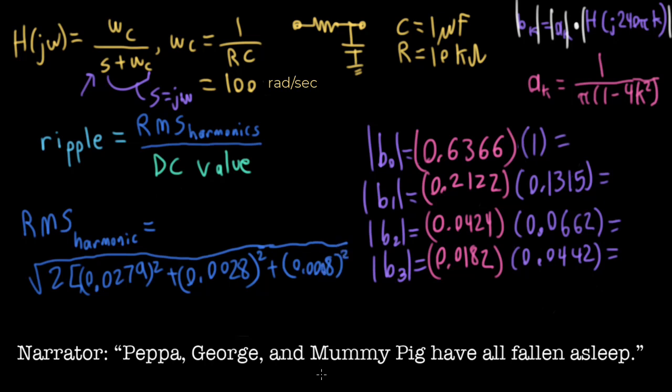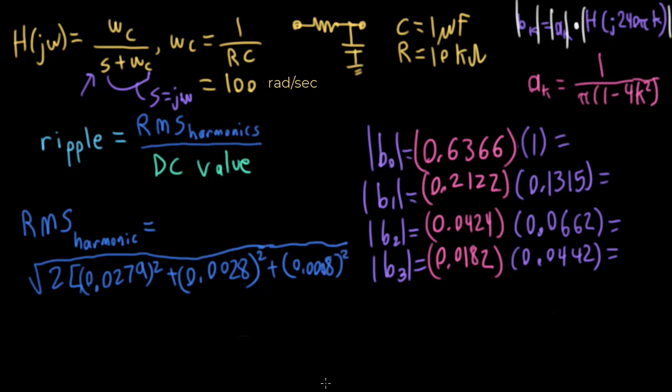And then my third term here, I'll take 0.008, oops actually there's another 0 in here, don't forget that, and I wind up squaring that. And again, I need to multiply by 2 to deal with the b₋₁, b₋₂, and b₋₃ terms, which have the same magnitude as b₁, b₂, and b₃.